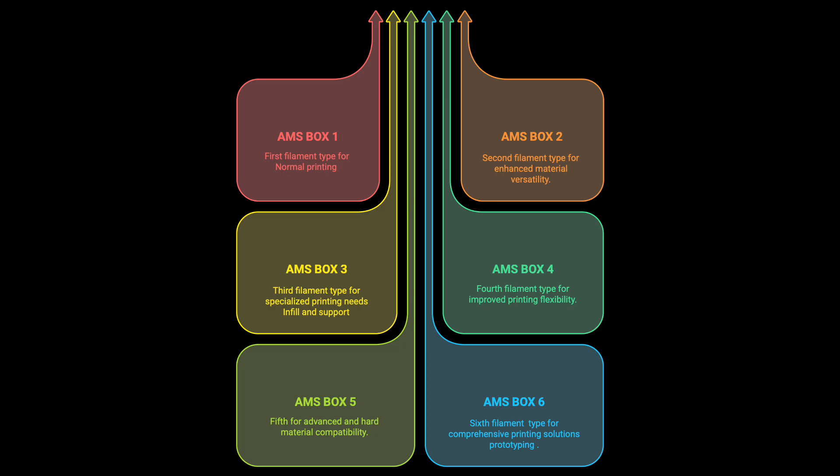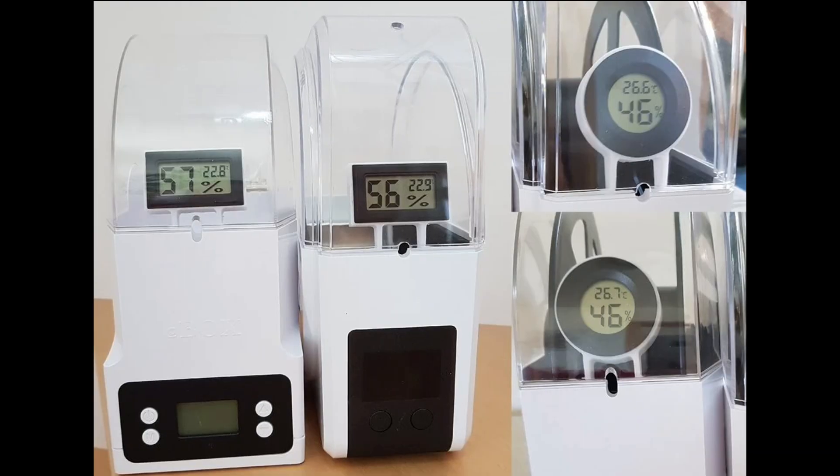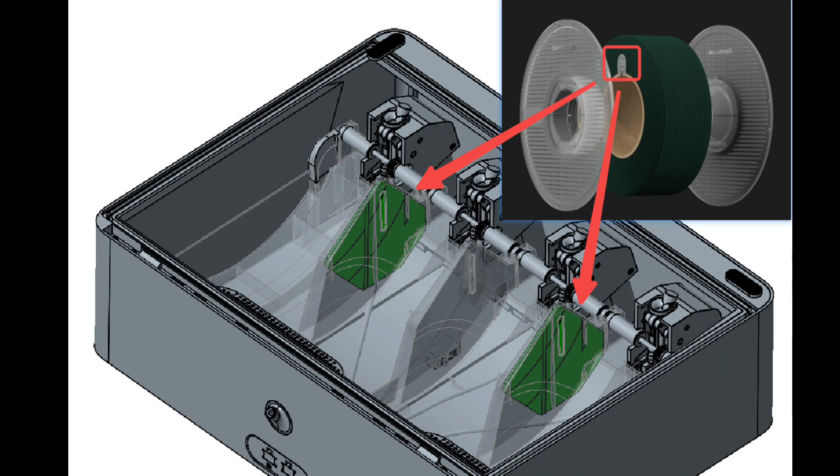Compare that to using a Sunlu box, where managing multiple spools means clutter and constant manual intervention. With the AMS2 Pro, everything is streamlined and automated.